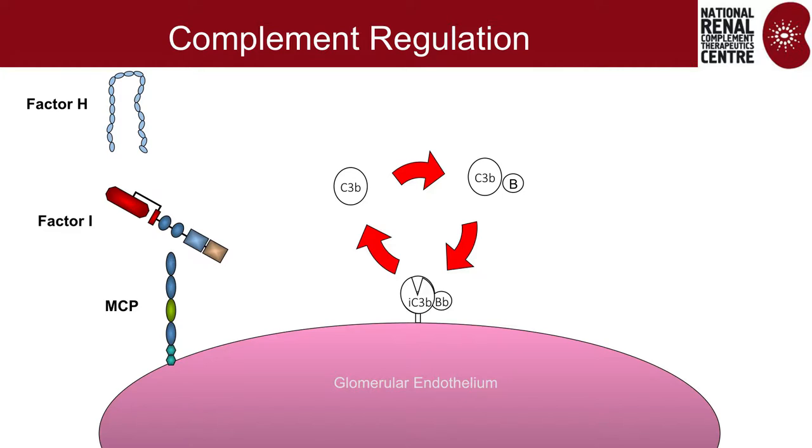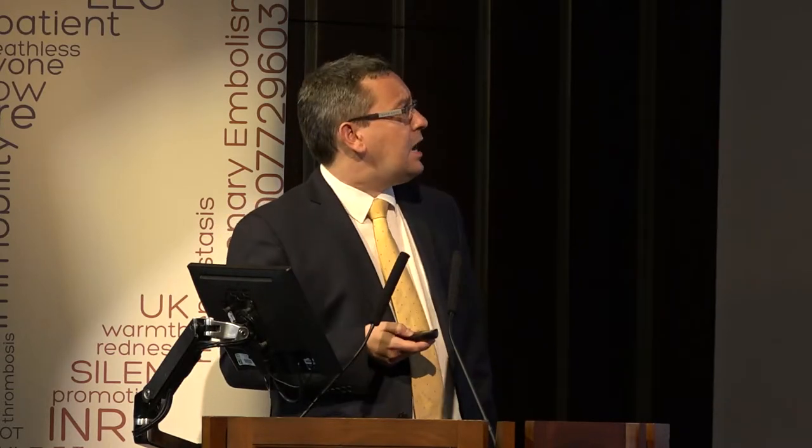These five proteins are all you need to know about complement and atypical HUS. Factor H, factor I, and MCP are the regulators — the brakes — and C3 and factor B are the components that upregulate. Factor I is the enzyme, MCP and factor H are the cofactors, and they cleave C3B to the inactive iC3B, stopping that amplification loop.